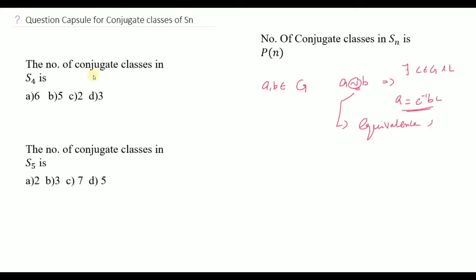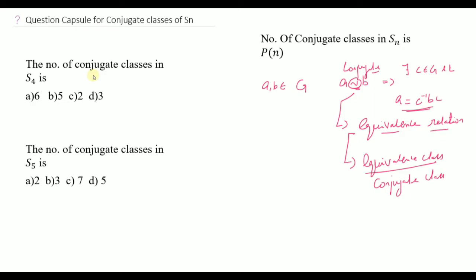This is an equivalence relation — it satisfies reflexive, symmetric, and transitive properties. The equivalence class here is called the conjugate class. The conjugate class of a, where a belongs to G, is defined accordingly.